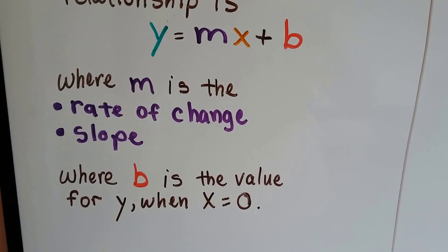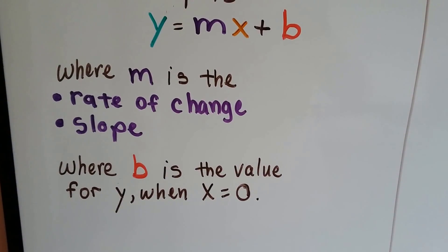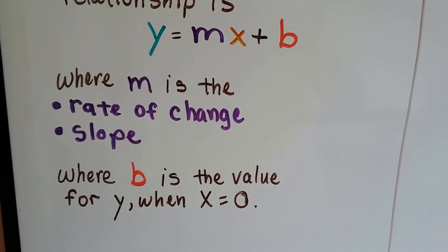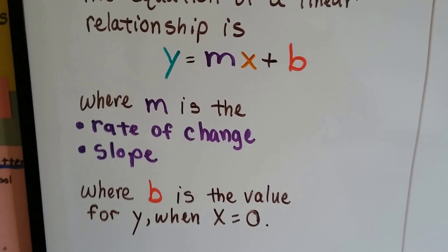m equals the rate of change or the slope, and b is the value for y when x equals zero. b is the y-intercept, it's where the line crosses the y-axis. That's why the x is zero.